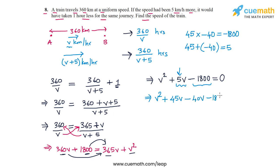And then I have minus 1800, this is equal to 0. Now from the first pair of terms I can take out v common, so I have v times v plus 45. From the second pair of terms I can take out minus 40 common, so I have minus 40 times v plus 45. This is equal to 0. And now I can take out v plus 45 common, so v plus 45 times v minus 40, so this is equal to 0.